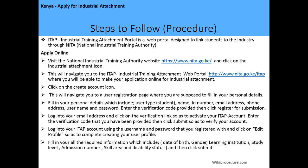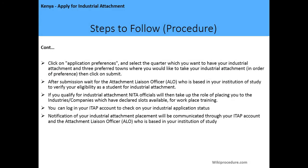After that, log in to your ITAP account using the username and password you registered with, and click on 'Edit Your Profile' so you can complete creating your user profile. Fill in all the required information, which includes: date of birth, gender, learning institution, study level, admission number, skill area, and disability status. Then click Submit.